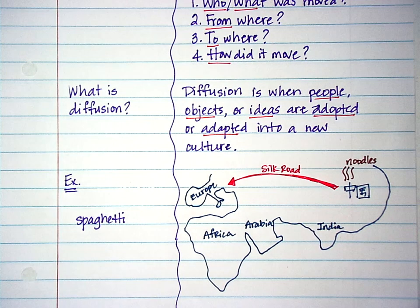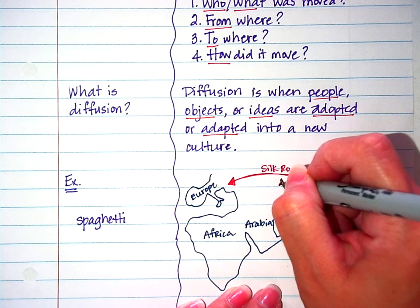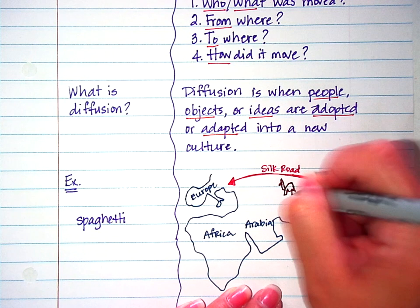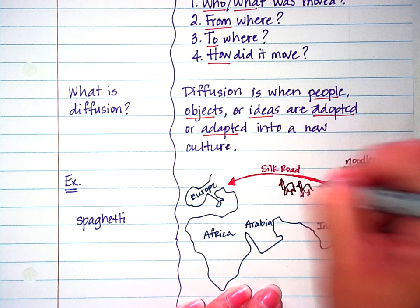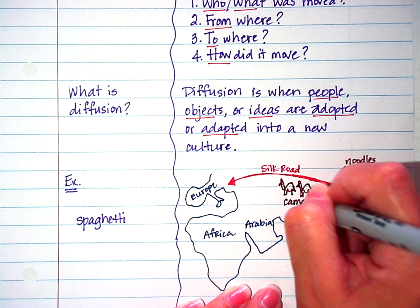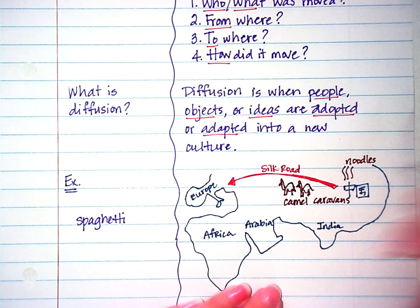Now how did it move across the Silk Road? Well most likely by merchants traveling in camel caravans.